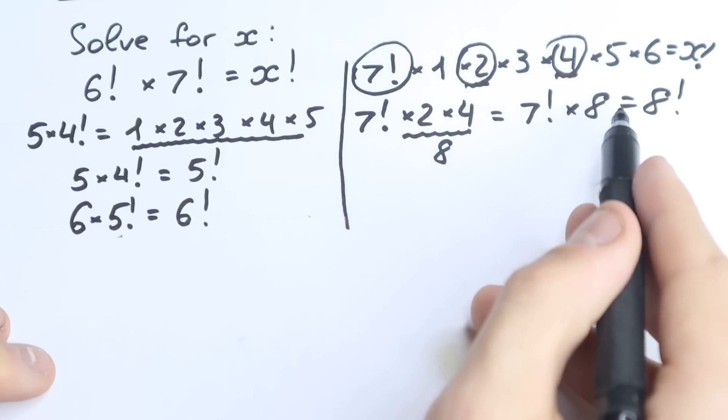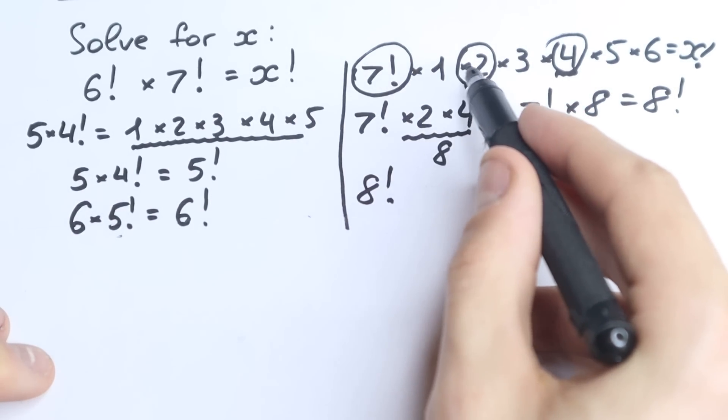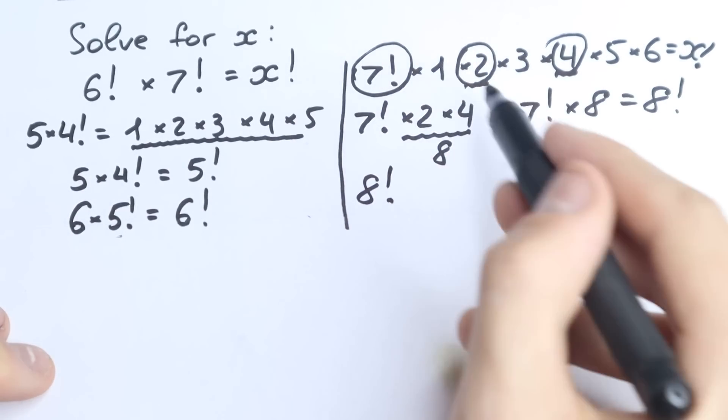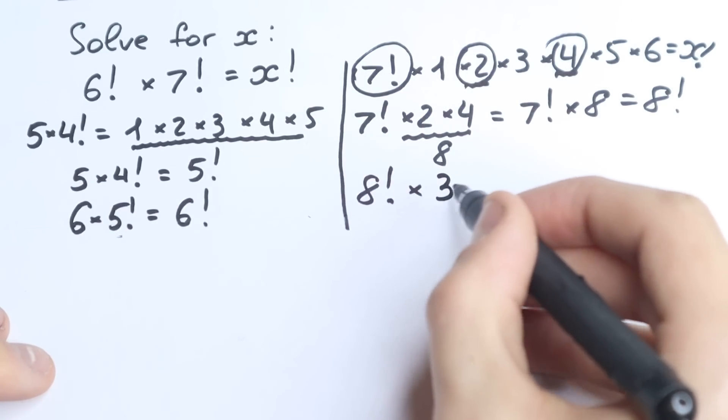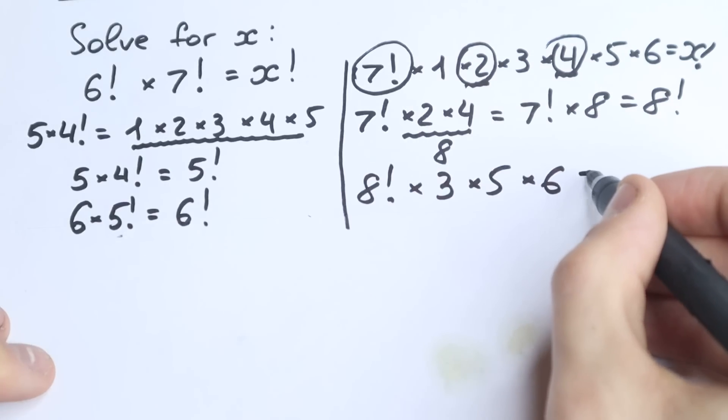So instead of these three values, we write 8 factorial. So we have 8 factorial times, we still have 3, 5, and 6. So we have times 3 times 5 and times 6 equal to x factorial.